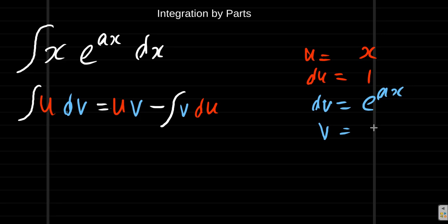v would be e to the a x over a. You can do this using integration by substitution to show that when you integrate e to the a x, you'll get e to the a x over a. I have other videos that show this done by integration by substitution.